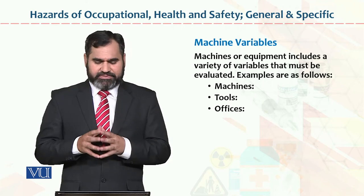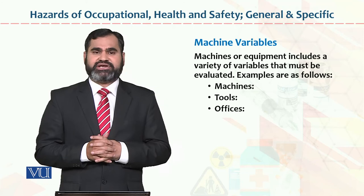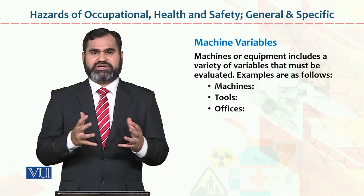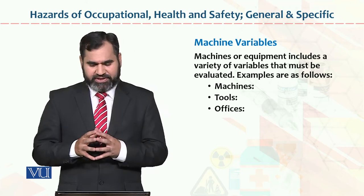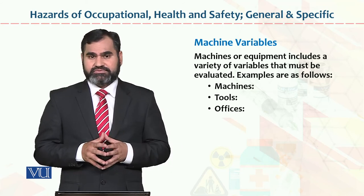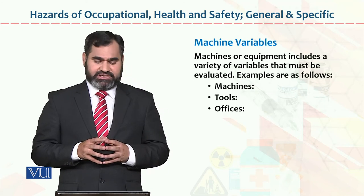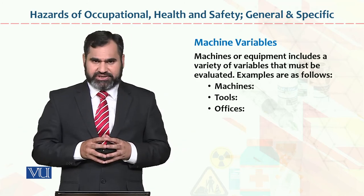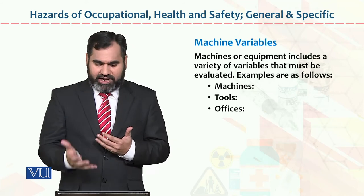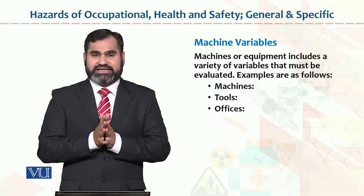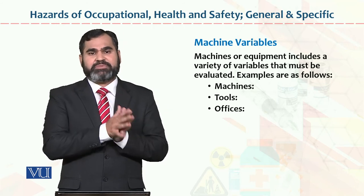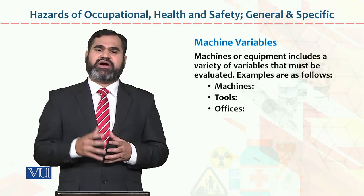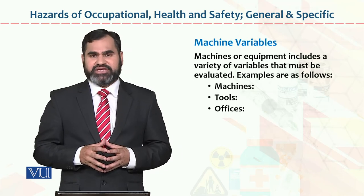Machine variables — machine or equipment includes a variety of variables which must be evaluated. Machine سے related کافی variables ہیں جن کو جاننا، evaluate کرنا، control کرنا، monitor کرنا important ہے. Examples are as follows: number one — machines; number two — tools; number three — offices. یہ تین چیزیں ہیں جو organizations کے اندر کام کرتے وقت استعمال ہوتی ہیں. Machine میں production process ہوتا ہے; tools وہ equipment ہیں جن کی مدد سے machine کو use کیا جاتا ہے; offices کے اندر office work perform کیا جاتا ہے. ان تینوں چیزوں کو ہم machine variables بولتے ہیں.